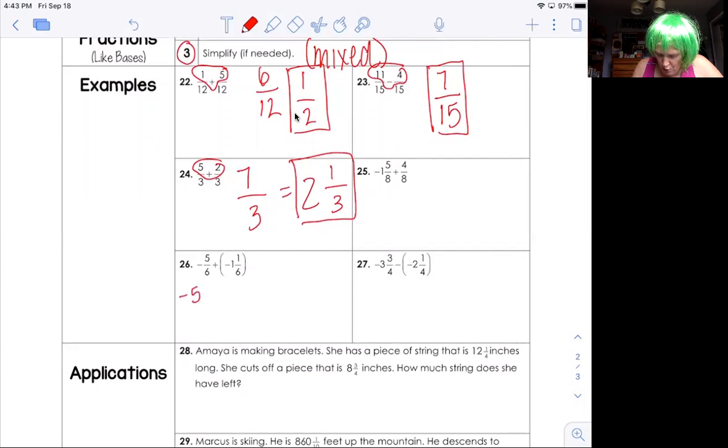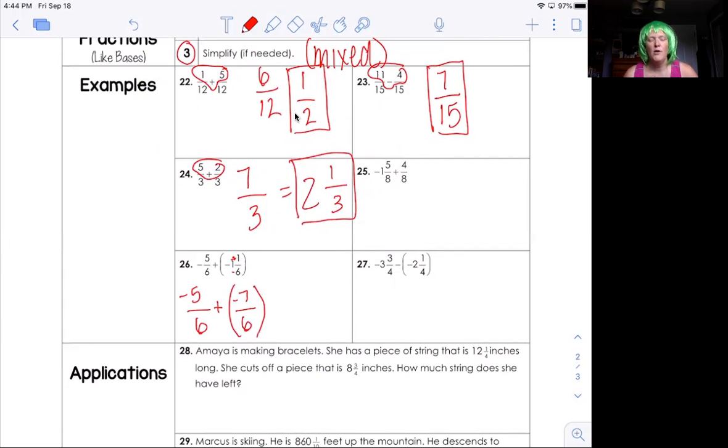So I write it like this, negative five over six plus, and I'm going to keep the parentheses there because when you add a negative, you got to separate them. Six times one is one plus one is seven. So I write negative seven over six like that. Let me know if that doesn't make sense.